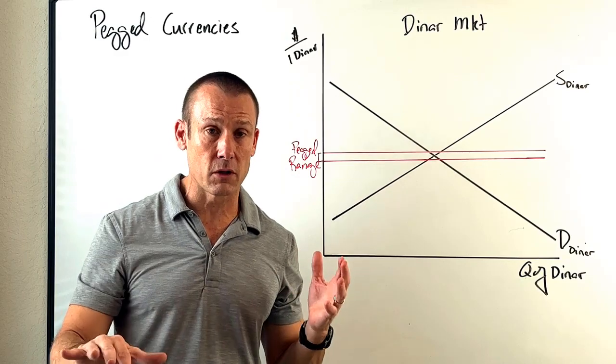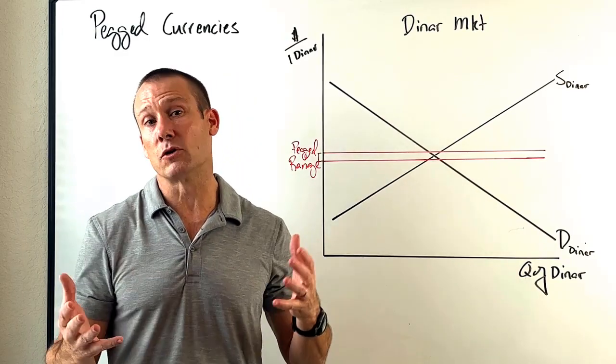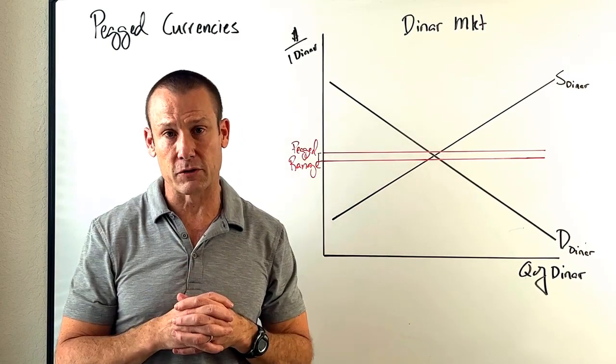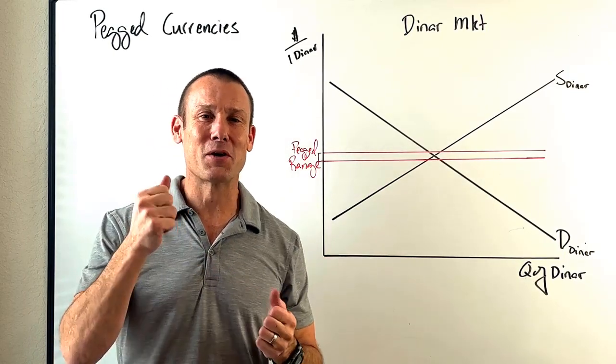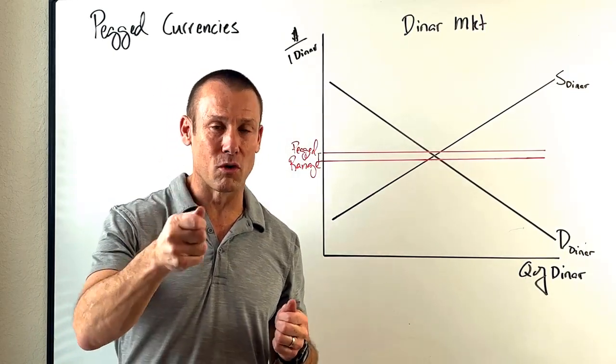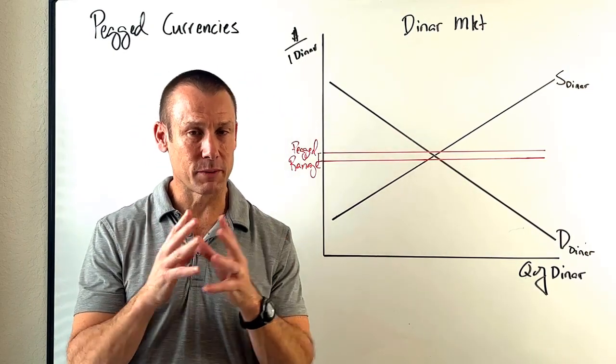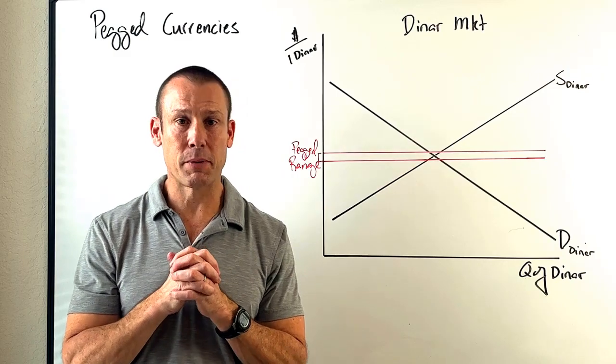So the word pegged is now used. The word fixed pretty much has fallen by the wayside. So much so that some people still use them interchangeably because they just say, hey, we don't even have the word fixed anymore. But anyhow, the word pegged is probably the better word nowadays. So that's what is a pegged exchange rate. Why do countries peg their exchange rate?